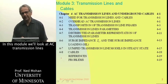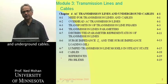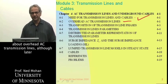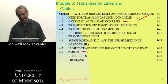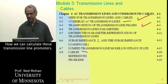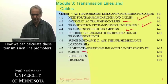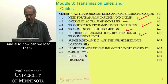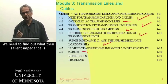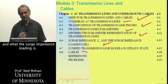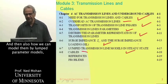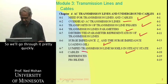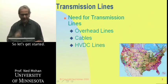In this module, we'll look at AC transmission lines and underground cables, and we'll start out with why we need them. We'll primarily be talking about overhead AC transmission lines, and we'll look at why we transpose these lines, how we can calculate transmission line parameters, and how we can represent these distributed parameter lines. We'll also find out what the surge impedance and surge impedance loading are, and how we can model them using lumped parameter models if we're only interested in the terminals of the line.